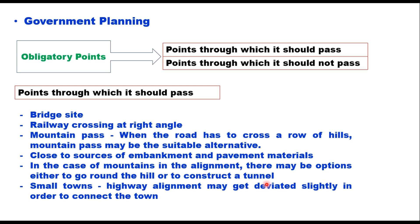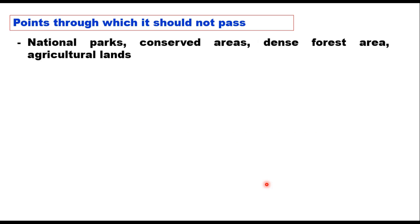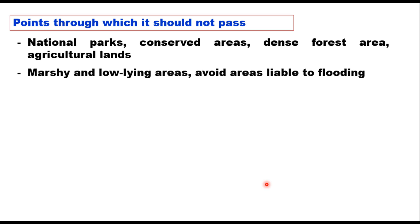Highway alignment may also deviate slightly to connect small towns at a later stage. Negative obligatory points — areas the alignment should not pass through — include national parks, conserved areas, dense forest areas, and agricultural land. Marshy and low-lying areas should be avoided, as well as areas liable to flooding during monsoons.